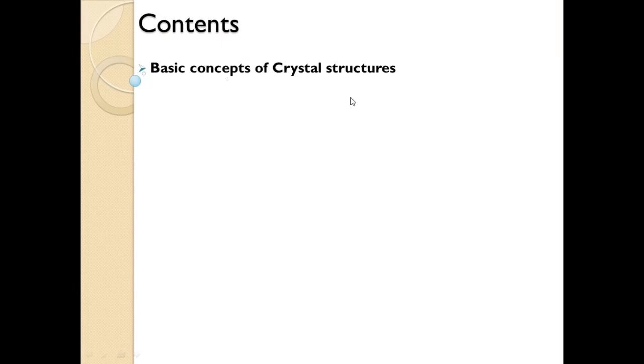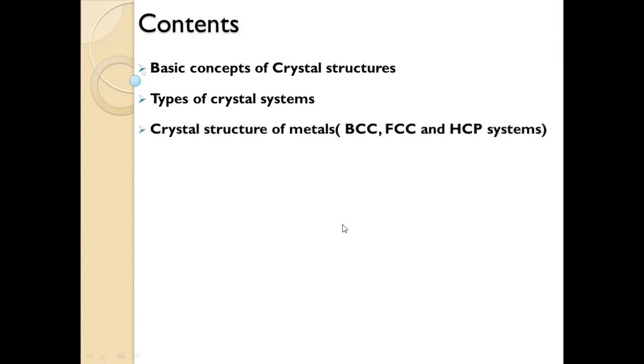First, we have to see the basic concept of crystal structure — what are the basic requirements or concepts related to crystal structure. Next, what are the different types of crystal systems available for materials. Then the various types of crystal structures available for materials, like BCC, FCC, and HCP crystal systems.